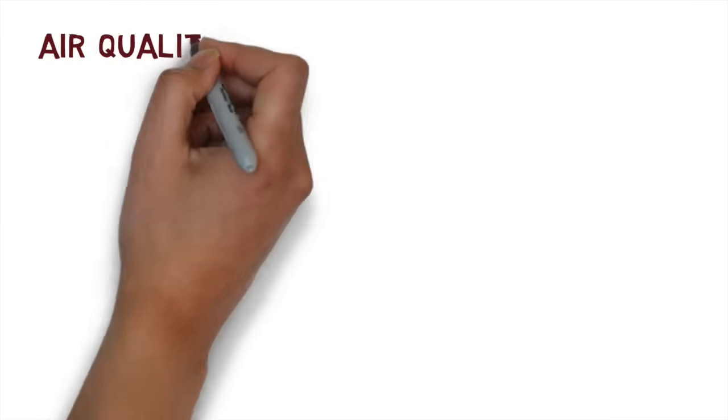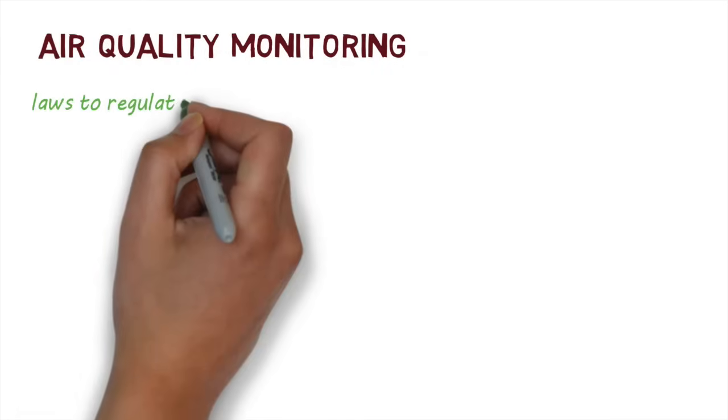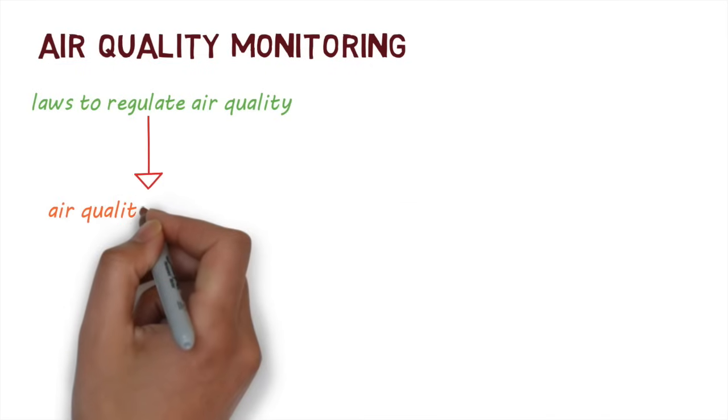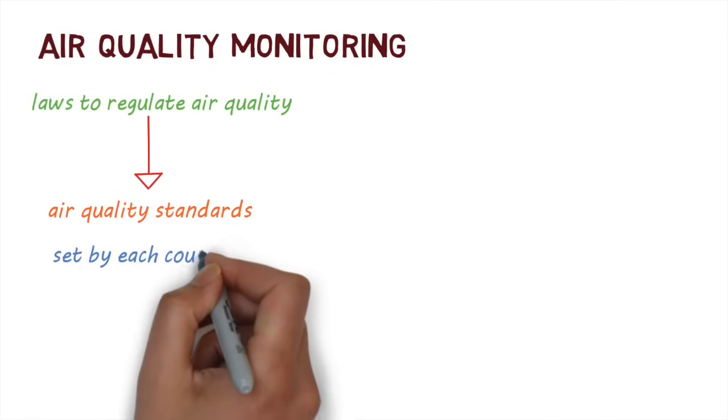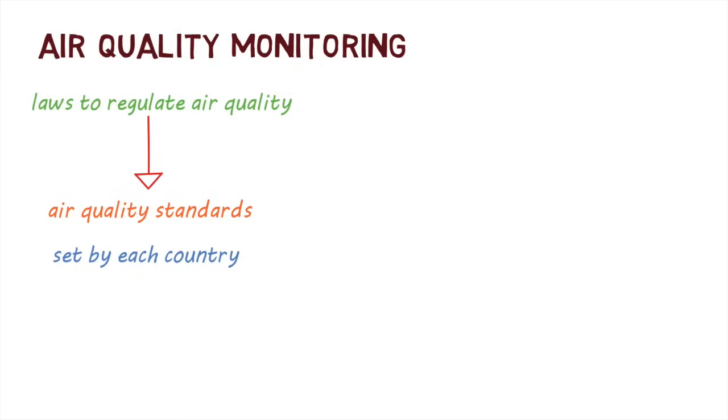Let's have a look now at how air quality is monitored. Most countries have national laws and regulations to control air pollution. These usually set out air quality standards that must be adhered to. These standards are set out by each country and will depend on factors like technological feasibility, economic considerations, capacity for air quality management, political, and social factors.